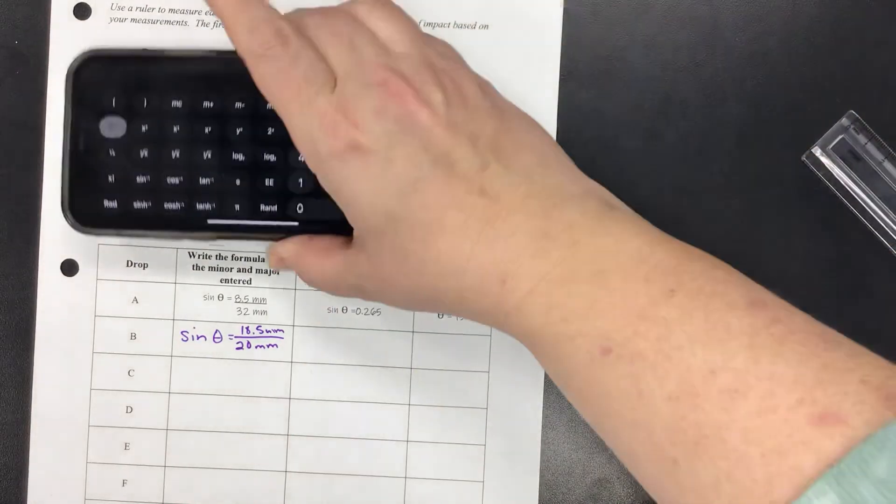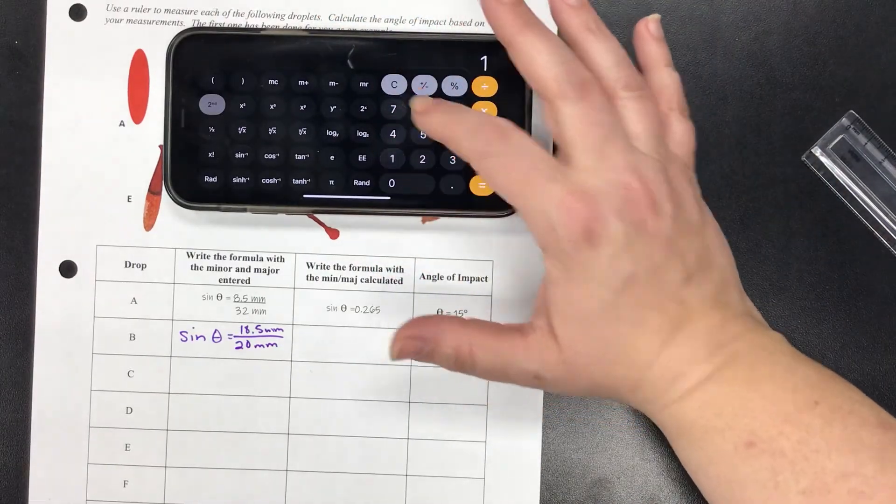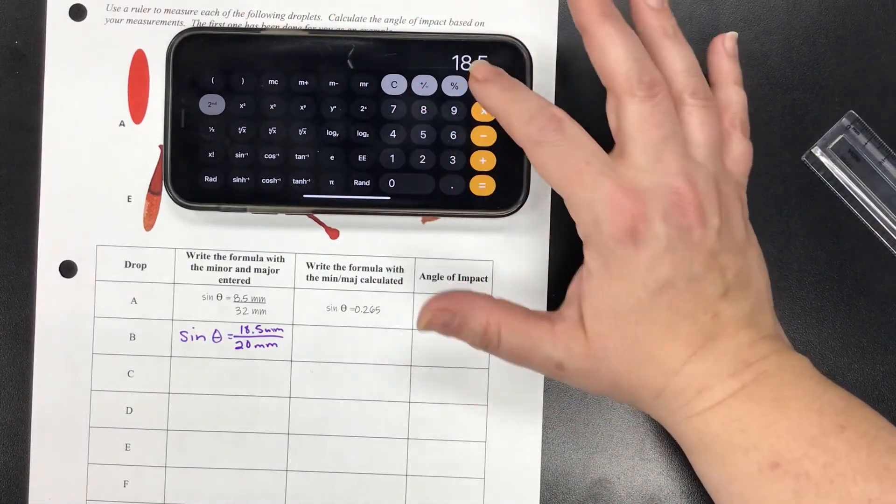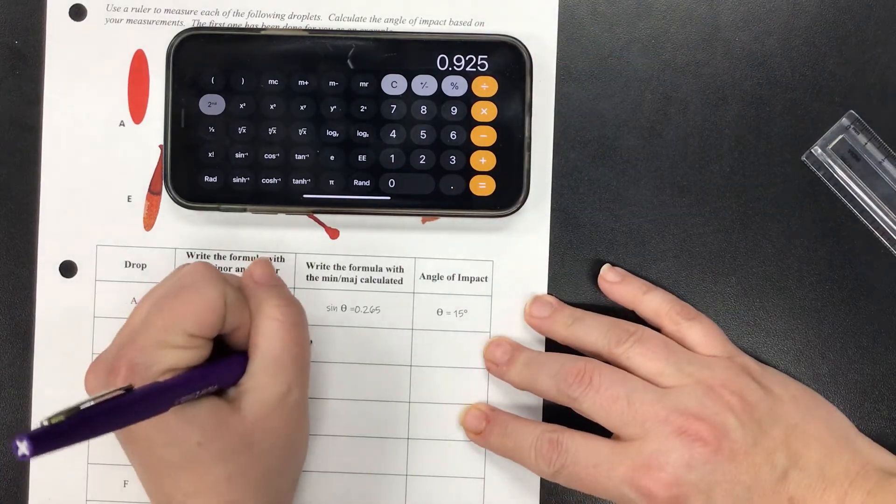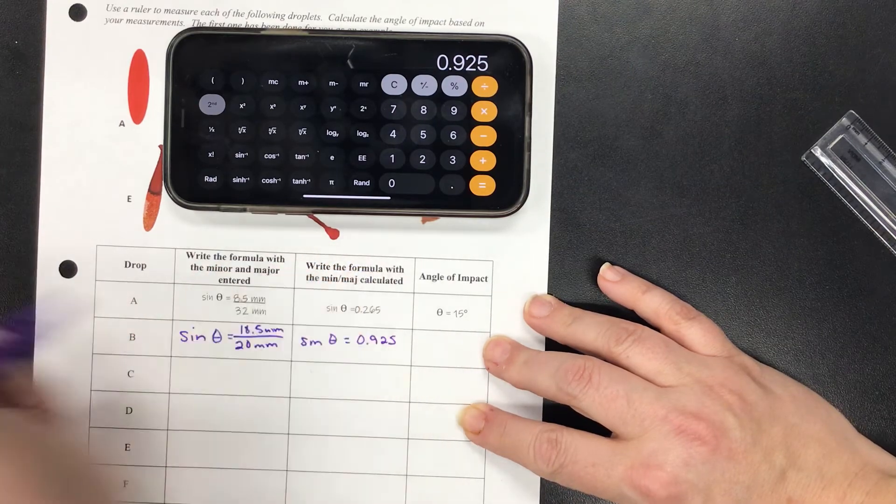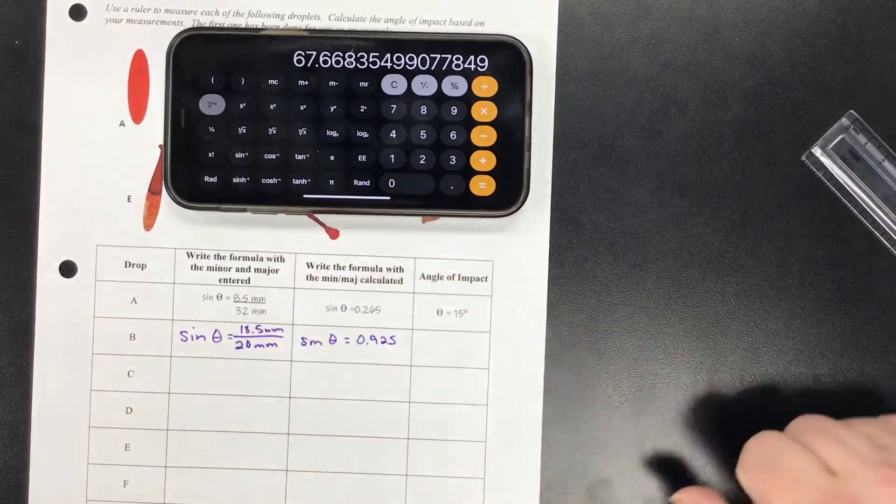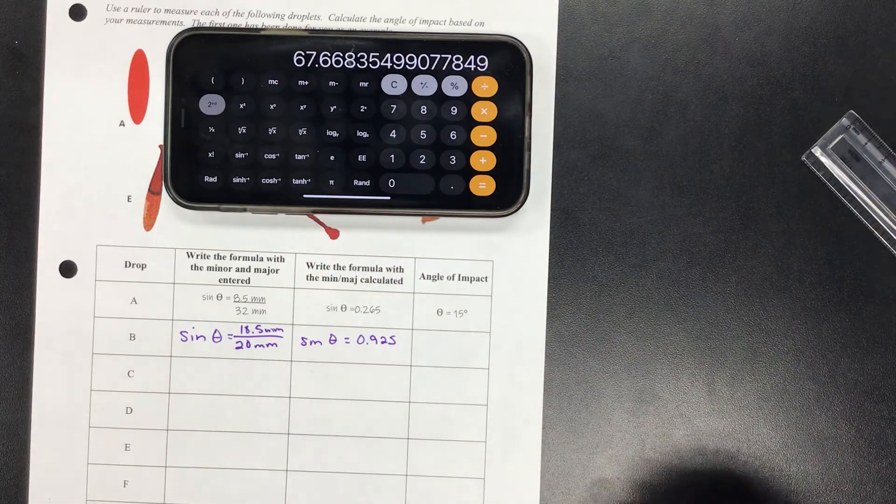And now I'm going to do the math. So I'm going to come over here, clear everything out, I'm going to do 18.5 divided by 20 and that's going to give me 0.925. So sin(θ) = 0.925, and now I'm just going to do the inverse sine of that.